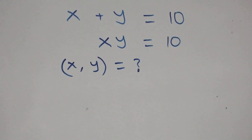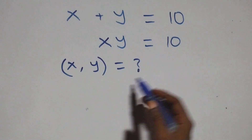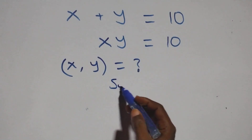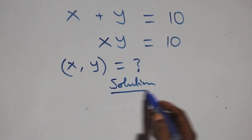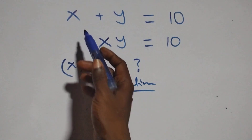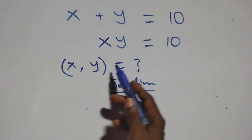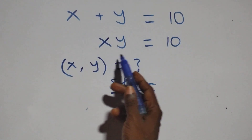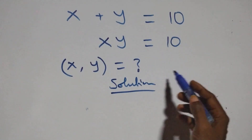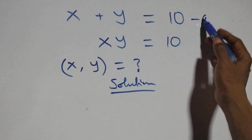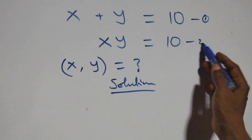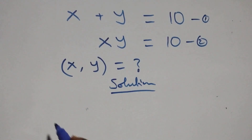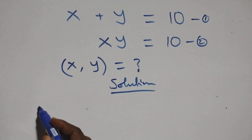Hello, you are welcome. Here is a nice algebraic equation to solve. We have x plus y equals to ten — we label this as equation one — and x times y equals to ten, which we label as equation two.